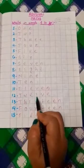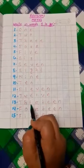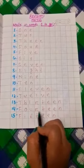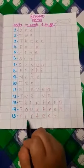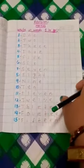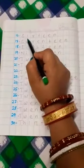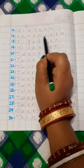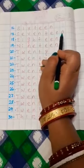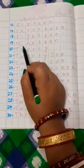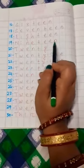T-W-E-L-V-E: 12, T-H-I-R-T-E-E-N: 13, F-O-U-R-T-E-E-N: 14, F-I-F-T-E-E-N: 15. After 15, S-I-X-T-E-E-N: 16, S-E-V-E-N-T-E-E-N: 17, E-I-G-H-T-E-E-N: 18, N-I-N-E-T-E-E-N: 19.